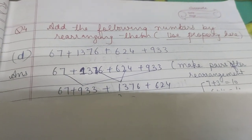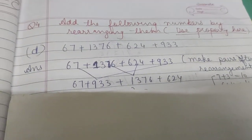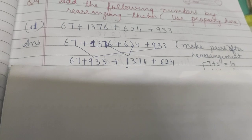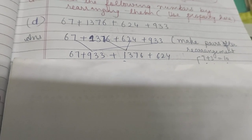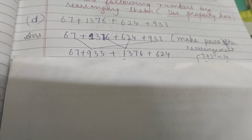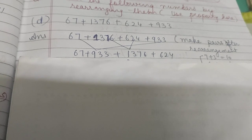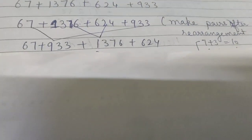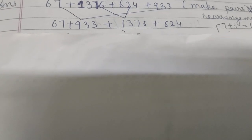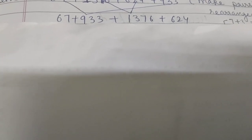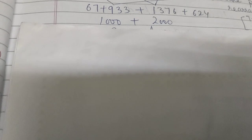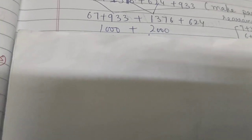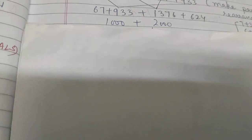I observed that 67 and 933 have the pair 7 and 3, which forms 10 — giving 0 in the ones place and a carry. Similarly, 1376 and 624 have 6 and 4 at the ones place, also forming 10. We add them and get 1000, then 2000 total.